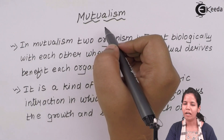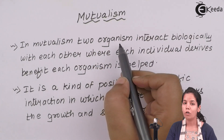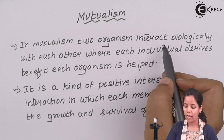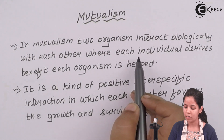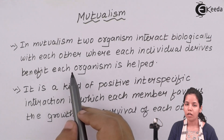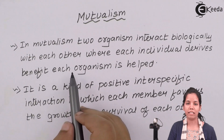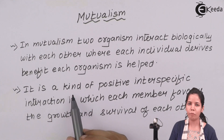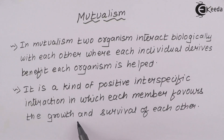Mutualism is nothing but an association in which two organisms interact biologically with each other, where both these individuals benefit from each other. An example could be two friends talking to each other, or two animals grazing in the same field. It is a kind of positive inter-specific interaction in which each member favors the growth and survival of another — everybody is trying to help each other so that everybody sustains and survives.